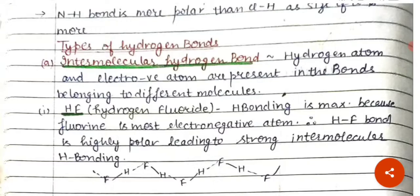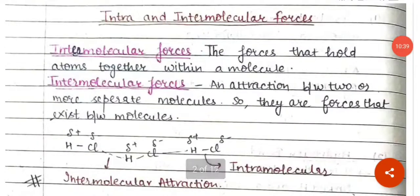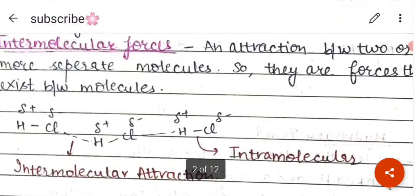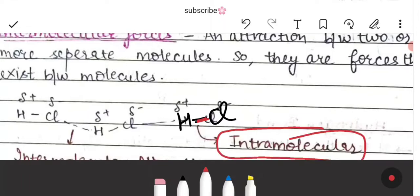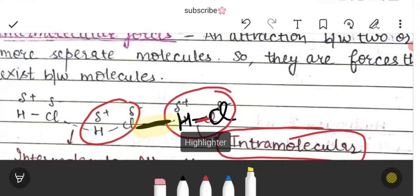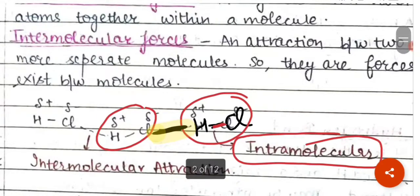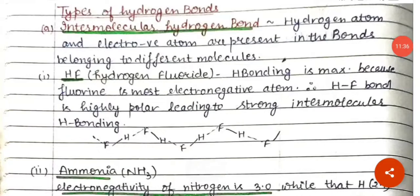There are two types of hydrogen bonding: intermolecular and intramolecular. Intramolecular refers to forces that hold atoms together within a molecule, while intermolecular refers to attraction between two or more separate molecules. For example, within HCl — between H and Cl — the attraction within the molecule is intramolecular, whereas the attraction between two separate HCl molecules is intermolecular.